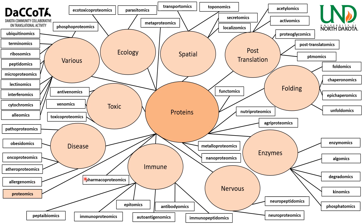Immune-related protein omics: immunopeptidomics (peptides and immunity), antibodyomics (antibodies used by the immune system to neutralize foreign objects), autoantigenomics (autoantigens that stimulate production of autoantibodies), epitomics (epitopes — parts of antigens recognized by antibodies), immunoproteomics (proteins involved in immune response), peptiobiomics (polypeptide antibodies), and pharmacoproteomics (proteomics and pharmacology). That was proteins — a lot — but the 'other' category will get even more complex.